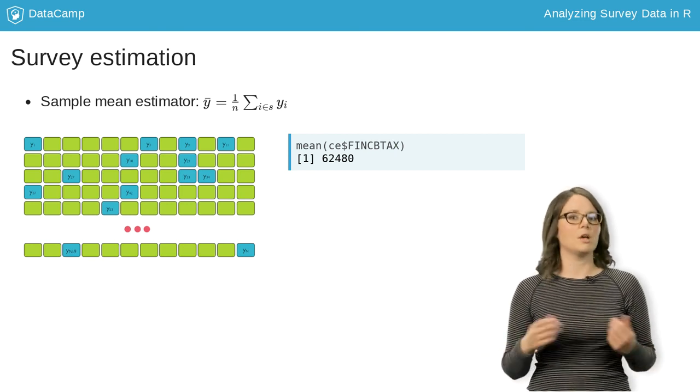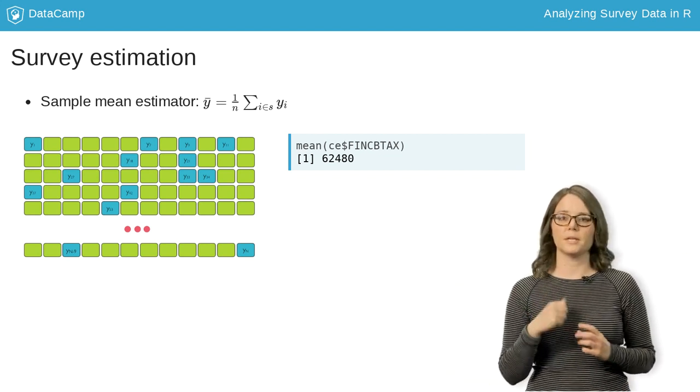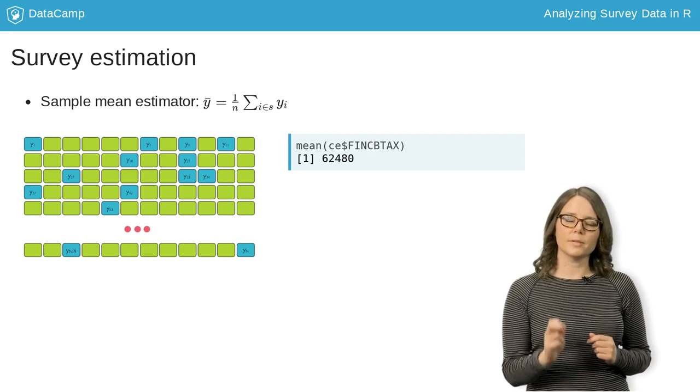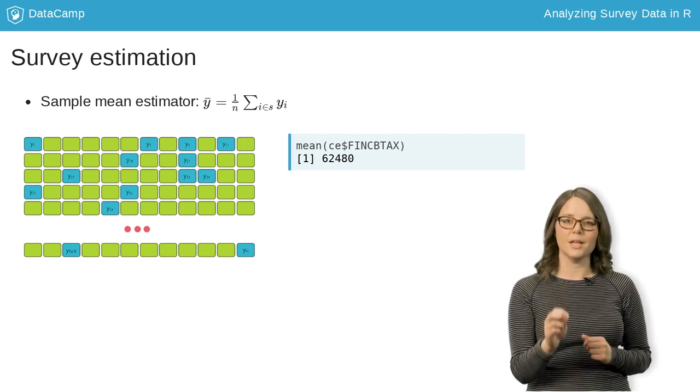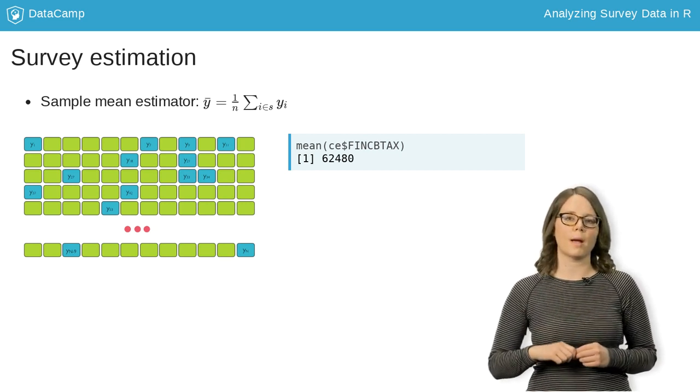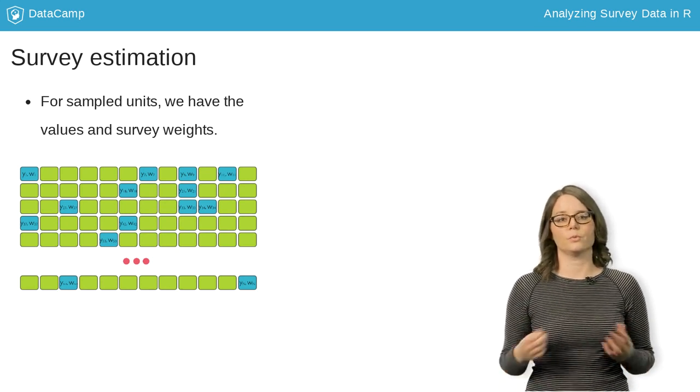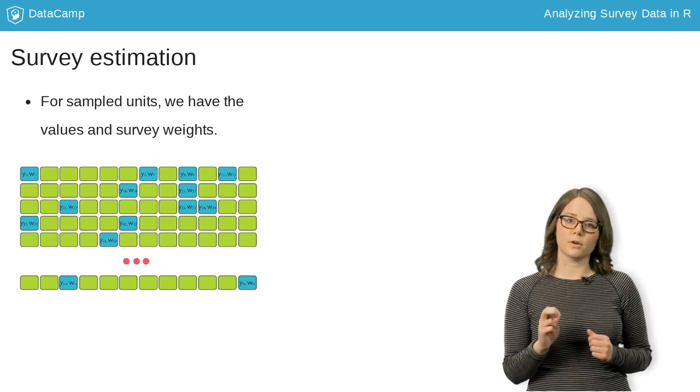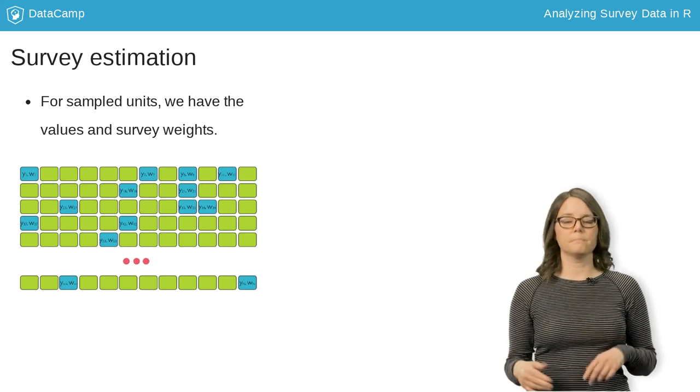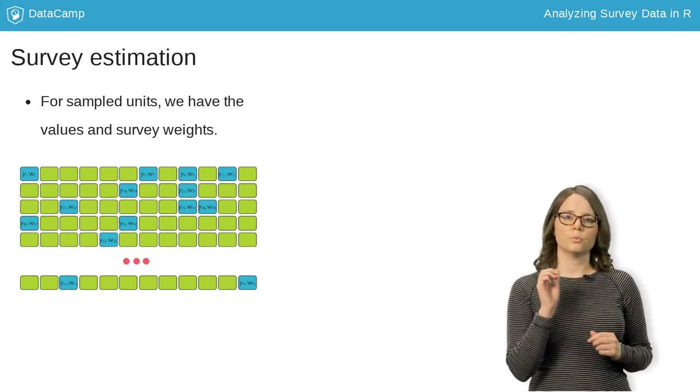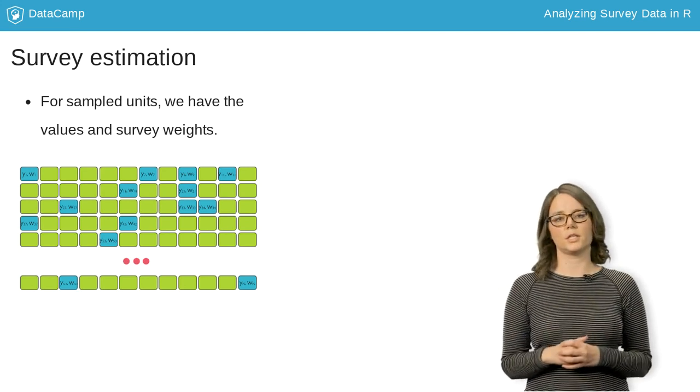Is this a good estimate of the average income of all U.S. households? Probably not. The problem is that the sample mean assumes all households in the sample represent the same number of households in the population. But when we looked at the survey weights, we learned that just isn't true. And remember, for the sampled households, we have both the income data and the survey weights. To properly estimate the mean income, we need to use both when constructing our estimator.